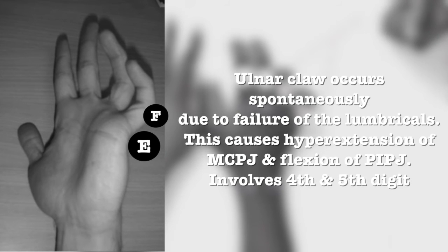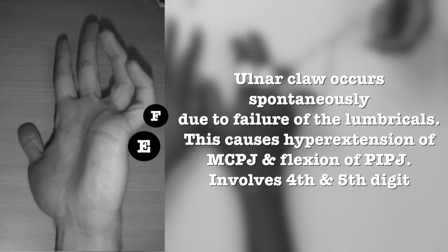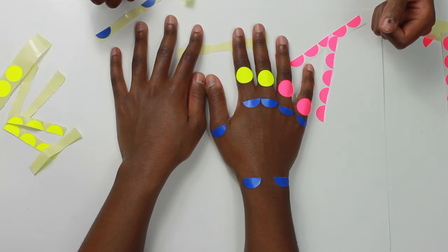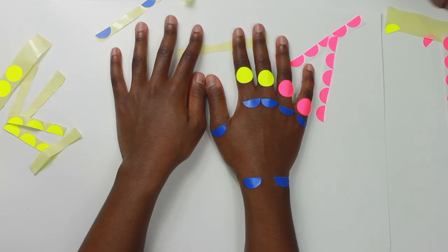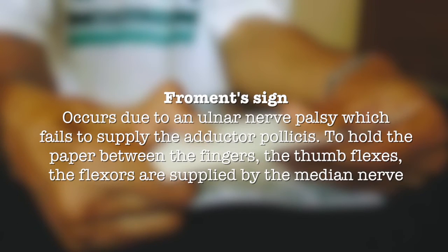Failure of this nerve may cause an ulnar claw. An ulnar claw occurs spontaneously due to failure of the lumbricals, causing hyperextension at the MCP joint and flexion at the PIP joint, involving the fourth and fifth digits only. Some patients with an ulnar nerve palsy may also present with a positive Froment's sign — ask the patient to hold a piece of paper between their thumb and index finger. A positive Froment's sign occurs due to failure to supply the adductor pollicis, so the thumb flexes to hold the paper, and this flexion is supplied by the median nerve.